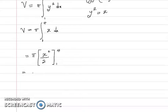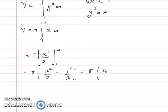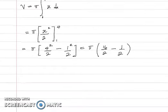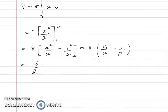Substituting: π times [(4²/2) − (1²/2)] = π times [16/2 − 1/2] = π times 15/2. The final answer is 15π/2 cubic units. It's cubic units because we are dealing with volume.